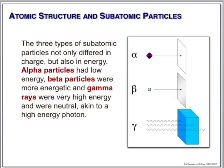A beta particle will typically go through a thin piece of metal - a very thin piece of lead will tend to stop it. To shield from gamma radiation, you need at least 10 to 20 centimeters of pure lead. So it's very, very difficult to stop high energy gamma radiation.